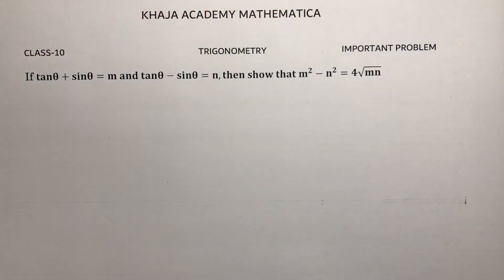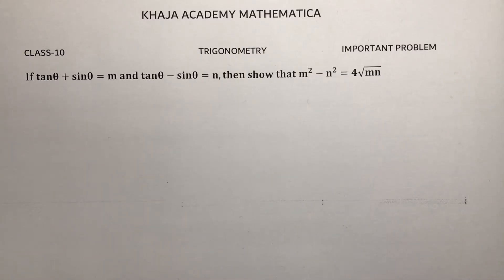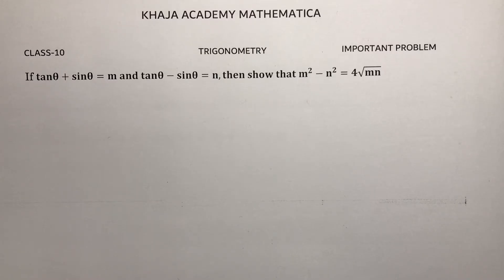An important problem from trigonometry: If tan θ plus sin θ equals m and tan θ minus sin θ equals n, then show that m squared minus n squared equals 4 root mn.